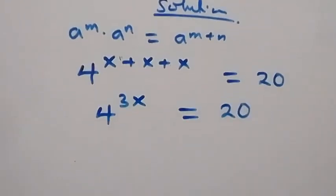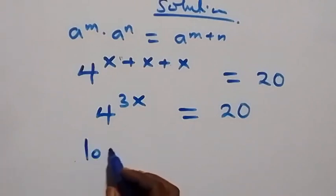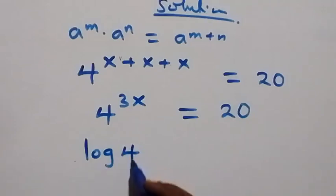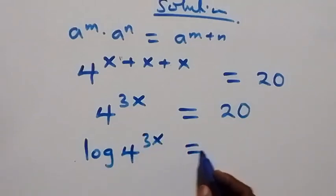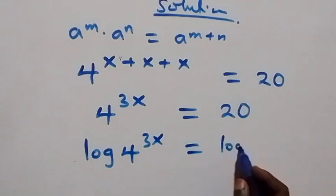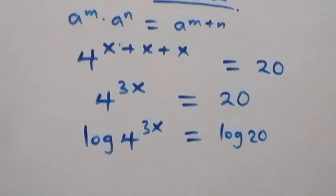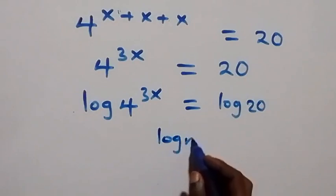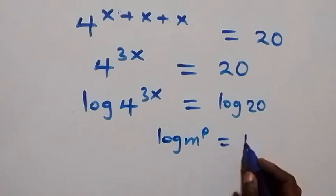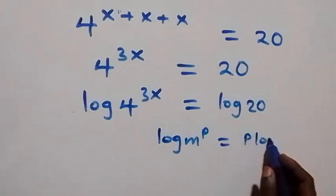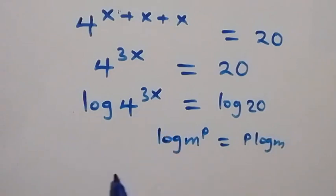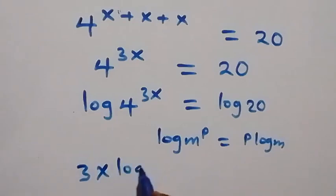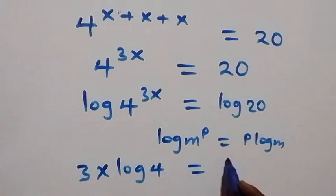From here we can take the log on both sides, then we have log of 4 raised to power 3x equals log 20. Following the power law of logarithms — log m raised to power p is the same as p log m — the power here is 3x, so we have 3x log 4 equals log 20.